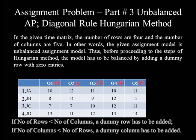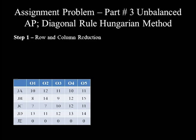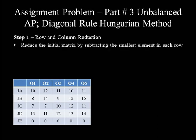In this particular case, the number of rows is less than the number of columns by 1, so we have to add one row with zero values — let's name that row 'Je'. Now the model is balanced, so we can continue to the steps of the Hungarian method.